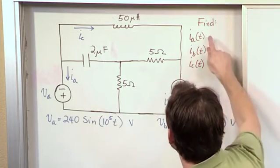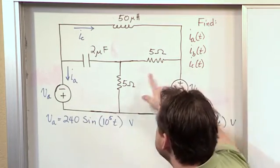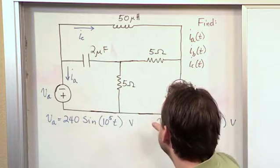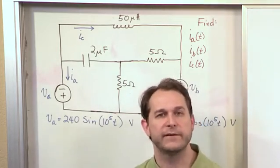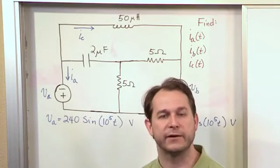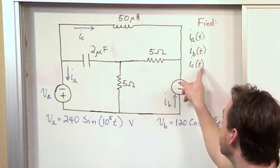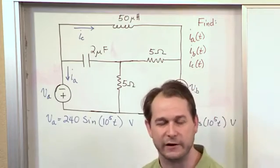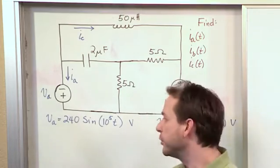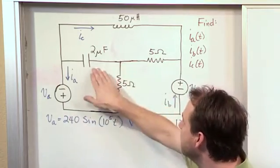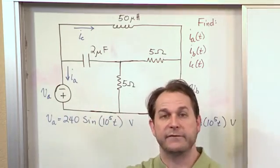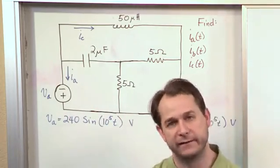What we want to do is find IA, IB, and IC, these currents, in their directions as they're drawn on the board. So we're assuming that those are the correct directions. We want to find those currents as if they were drawn correctly on the board. And we want them in the time domain.